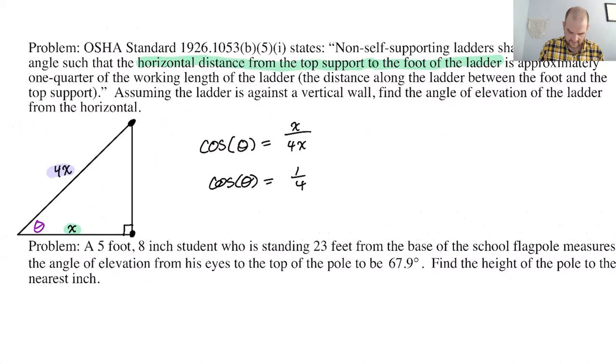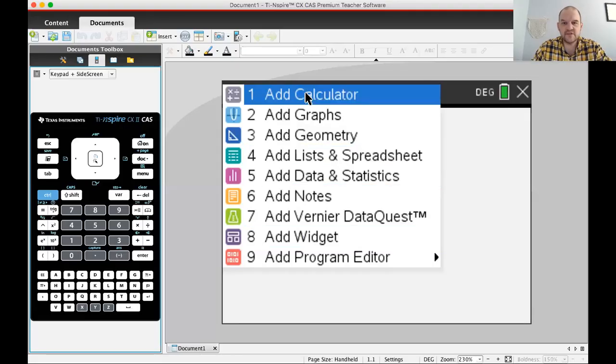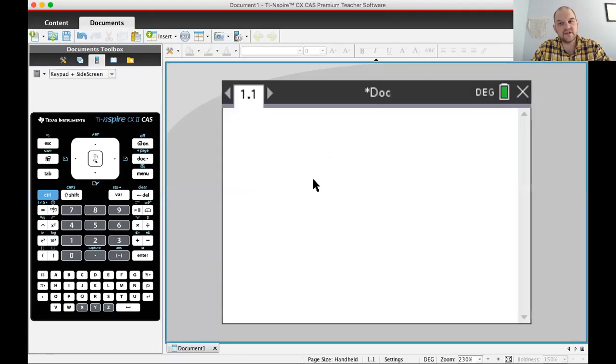So if that's the case, then theta should be the inverse cosine of one fourth, which is great, except I feel like when you're working, you probably aren't thinking of the inverse cosine of one fourth when you're about to climb a ladder. So let's get a decimal on that. Let's see how steep this can be. So I'm going to share the calculator. See how this goes. Sometimes this doesn't go well. All right.